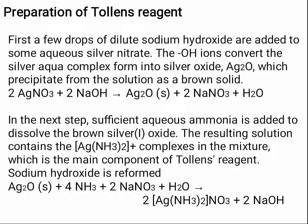In the next step, sufficient aqueous ammonia is added to dissolve the brown silver oxide. The resulting solution contains the silver diamine complex, [Ag(NH₃)₂]⁺, which is the main component of Tollens' reagent, and sodium hydroxide is reformed. So in the first stage silver oxide forms, and in the next stage ammonia reacts with the silver oxide to form the silver diamine complex.